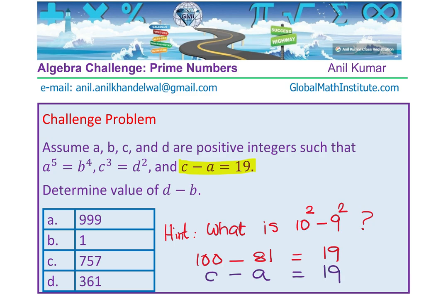Now, we know what C and A are and from there you can find the other parameters, B and D, right? So C is equal to 100, you can substitute 100 for C and find the value of D. A is 81, substitute 81 for A and find the value of B.